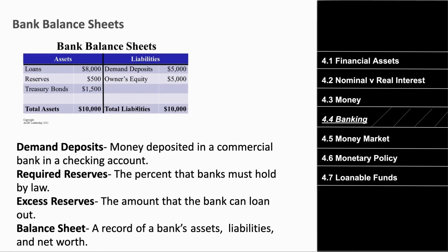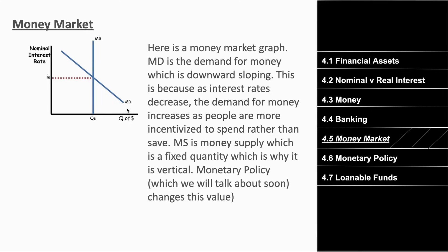The money market graph plots the demand and supply of money. On the x-axis is the quantity of money in circulation; on the y-axis is the nominal interest rate. The money demand curve shows that the higher the nominal interest rate, the less demand there is — a higher interest rate disincentivizes loans, which harms the economy. So higher nominal interest rates mean lower demand, and lower interest rates mean higher demand.